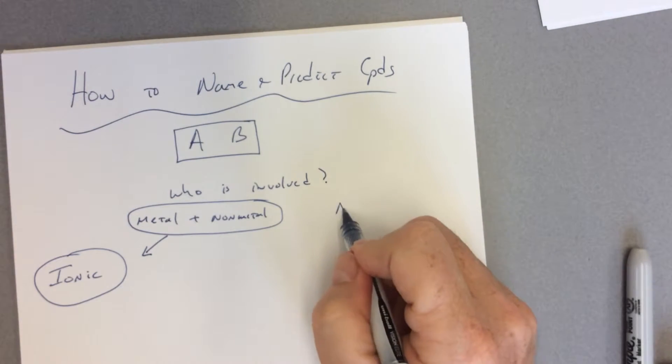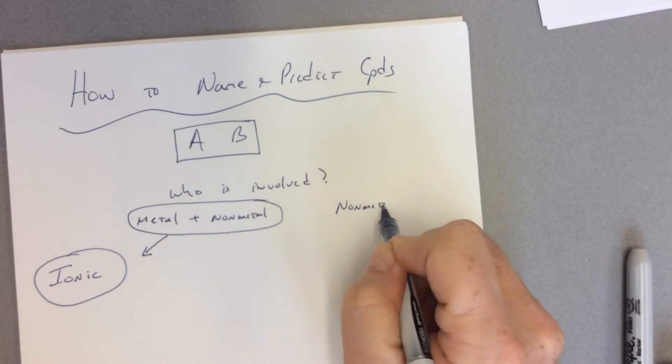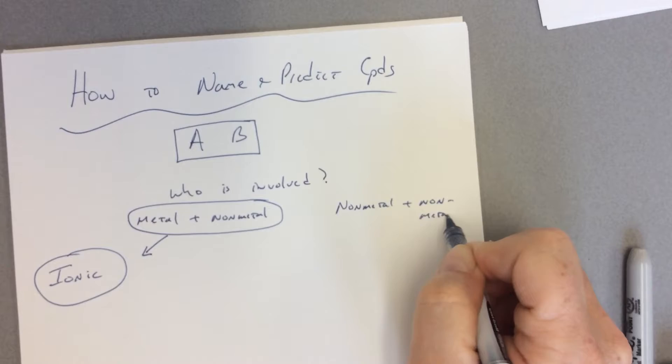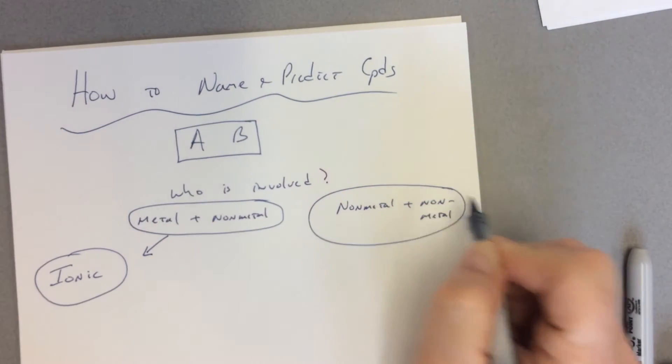And if we see that we have two nonmetals, so if it's a nonmetal plus a nonmetal, then we need to know that we're going molecular.